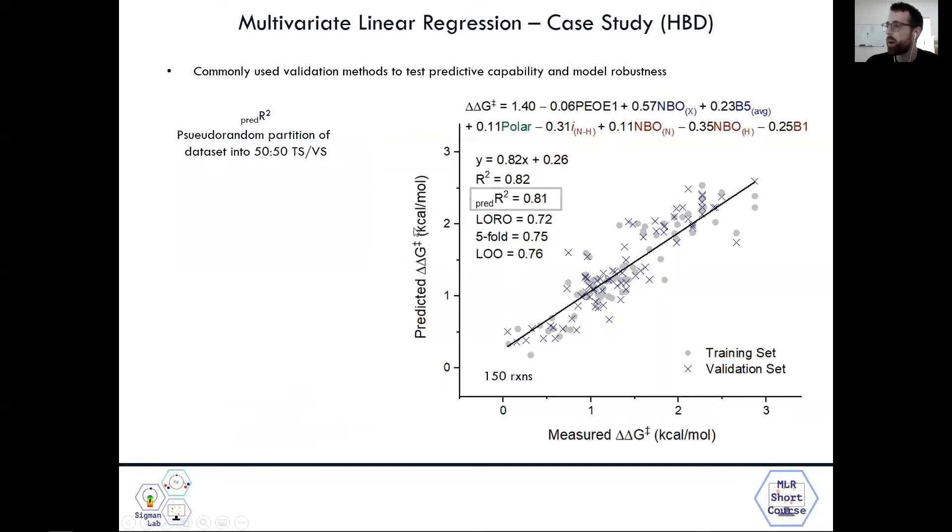So first time to predict R-squared, this was done using a pseudo random partition of our data set, our 150 reactions into 50-50 split of training set and validation set. So what happens is our software takes a random 50% reactions out, and then the remaining 50% is used as a training set. And then we get a validation set that we use to judge the initial predictive nature of our model. And we see here to predict R-squared value is 0.81, which is pretty good relative to our model fit at 0.82.